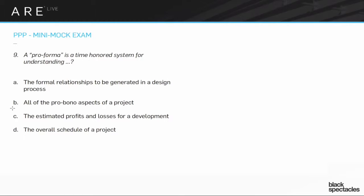So a proforma — I'm just going to whip through these pretty fast. A is definitely not it. While I kind of like the idea that a proforma is about the pro bono aspects of a project, which would be the donated aspects of a project, that's definitely not it. C is the correct answer.